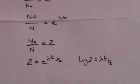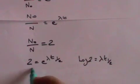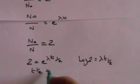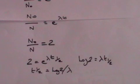Now we can take logs of both sides and we get that log 2 equals lambda t to the half. And that means that t to the half, which is the half-life, is log 2 divided by lambda. And that's the way of calculating what the half-life is. It's log 2 divided by the decay constant, lambda.